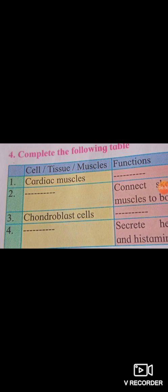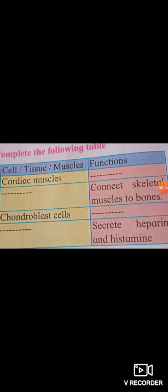Number three: chondroblast cells. We have to write the function of chondroblast cells. Chondroblast cells are present in cartilage and are immature cartilage-forming cells. The answer is that chondroblast cells mature and get converted into chondrocytes, as given in your textbook.